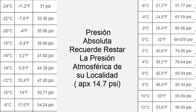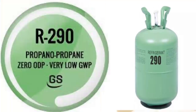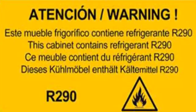The main drawback of R290 is its classification as a flammable refrigerant. However, as the refrigeration equipment where it is used does not have such high refrigeration capacities, and R290 has a significant cooling capacity, small commercial equipment requires very little R290 refrigerant, reducing the risk significantly.